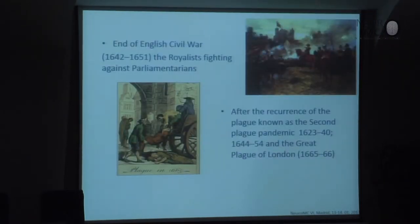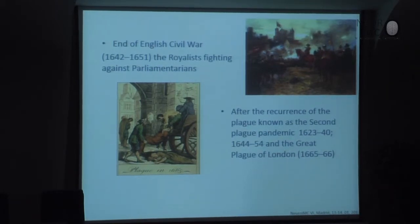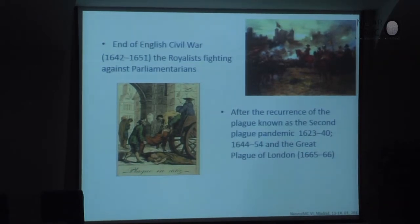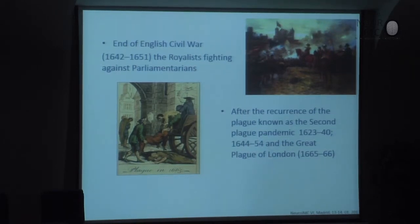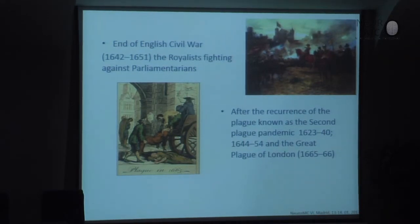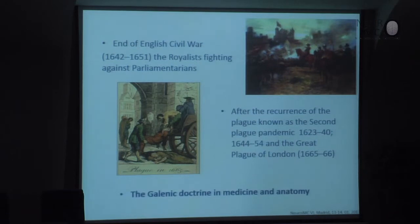What was the historical perspective at this moment when this important discovery was made? First of all, this was the end of the English Civil War, with royalists fighting against parliamentarians. This was also after the recurrence of the plague — the second plague pandemic and the great plague of London. So these were quite difficult times for making scientific work. But probably the most important challenge for Willis was the Galenic doctrine in medicine and anatomy.